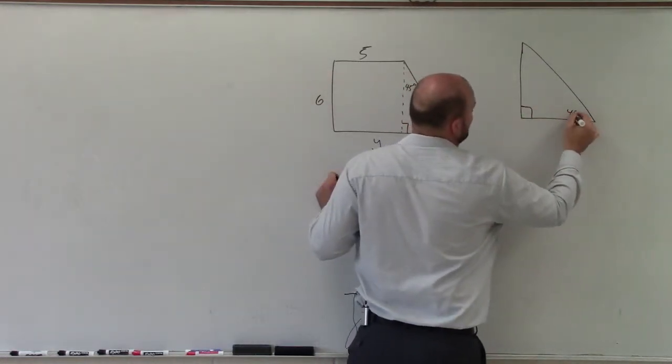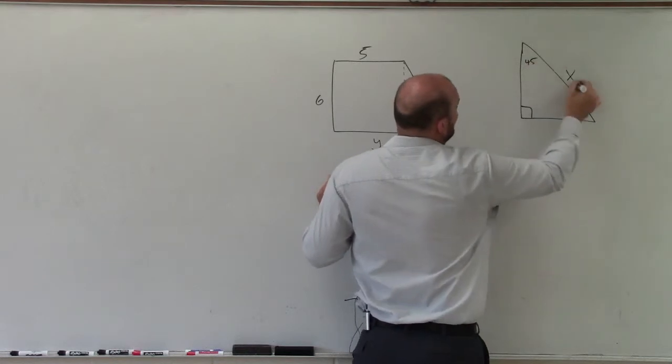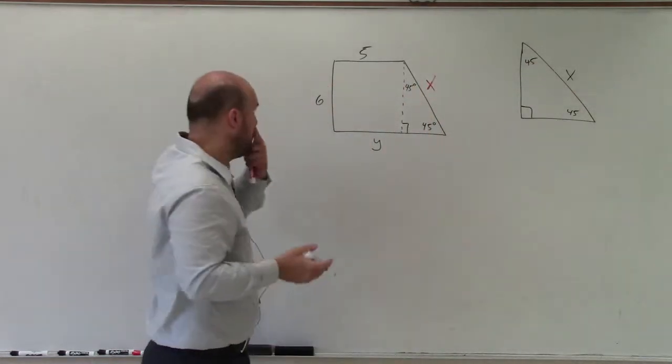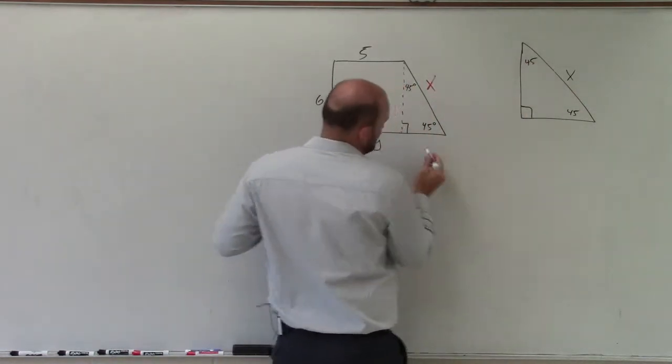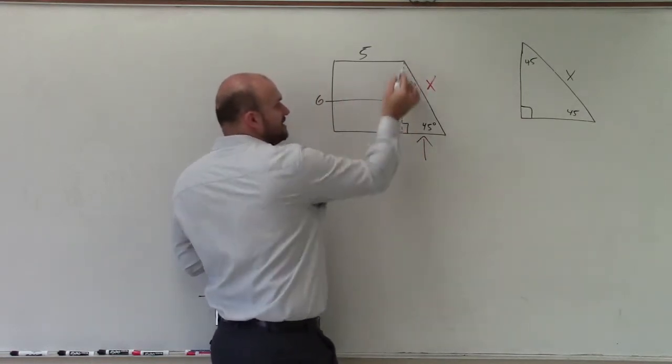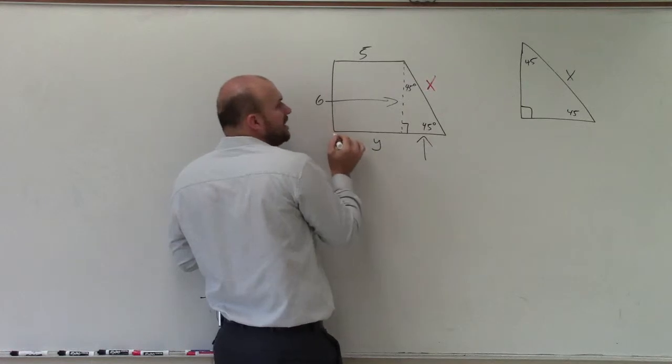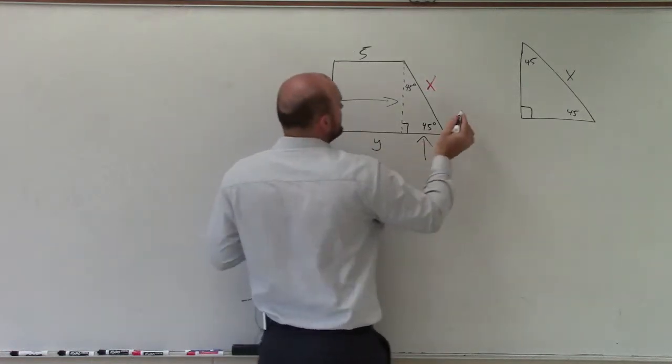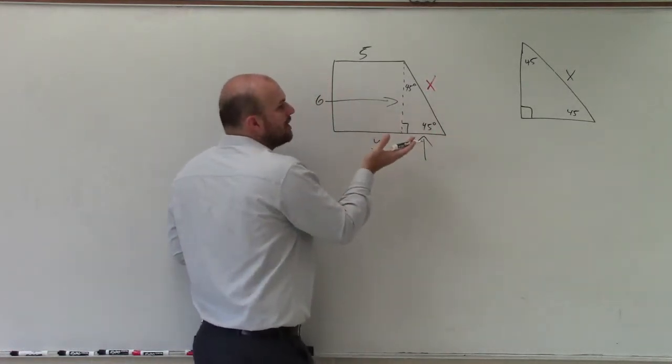We know it's a right angle. It's a 45-45. And we want to figure out what x is, right? Well, do we know the length of one of these sides? We don't know this length, but we do know this length, which is 6, right? Because this length is the same as the height of this trapezoid. I'm assuming it's a trapezoid, of this quadrilateral.